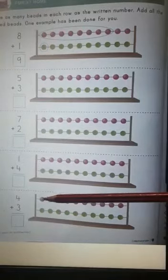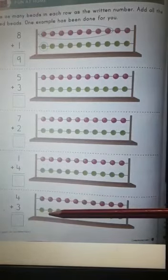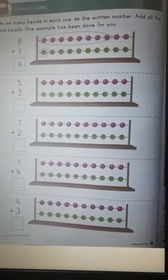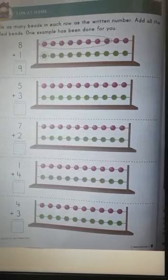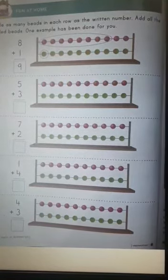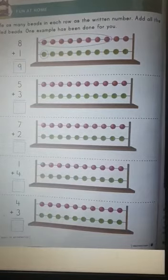Let's add them. 1, 2, 3, 4, 5, 6, 7. Answer will be 7. So this is the way you have to circle as many beads in each row as the written number and then add these circle beads. I hope you all will enjoy. Thank you. Have a nice day.